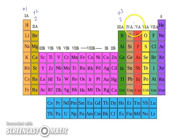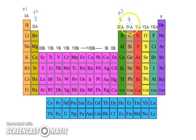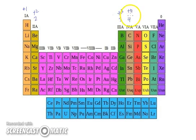Elements present in the fourth group have four valence electrons and they also have a tendency to lose electrons to complete their octet. They lose electrons equal to their valence electrons, so they show a plus four charge.